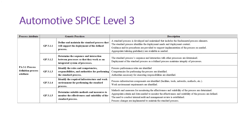Let us get into the detailed generic practices of Level 3. GP 3.1.1 is about defining and maintaining the SOP that will support deployment of the defined process. GP 3.1.2 is about determining the sequence of interactions, meaning the workflow of the process. GP 3.1.3 is about roles, competencies, and responsibilities of that particular standard process. GP 3.1.4 is about identifying the required infrastructure and work environment. GP 3.1.5 is about determining suitable methods and measures to monitor the process — defining metrics applicable to monitor it.